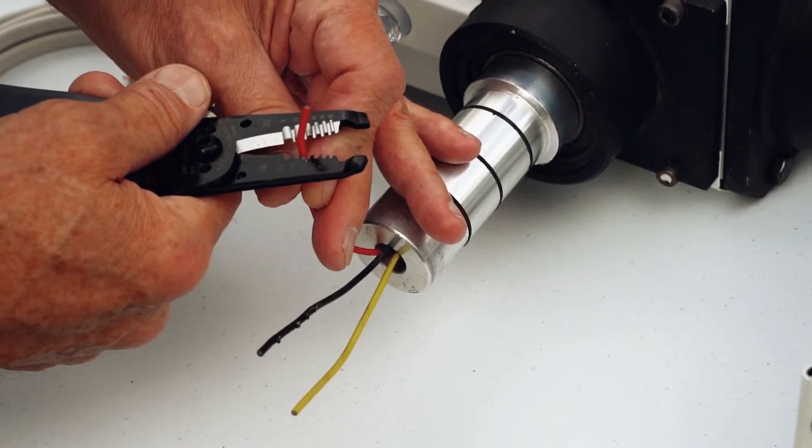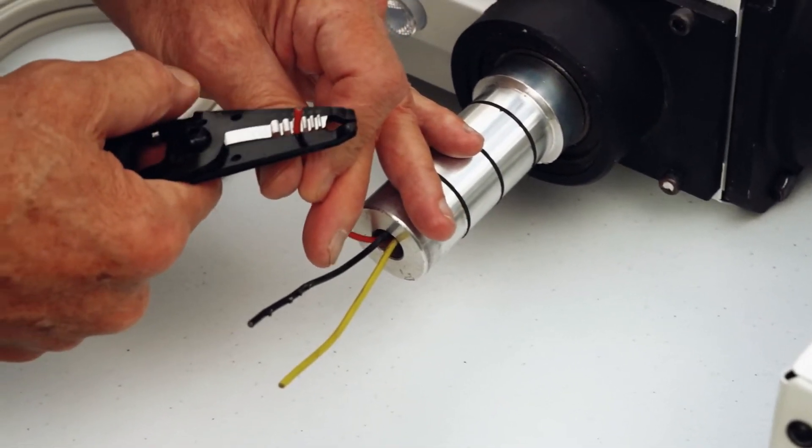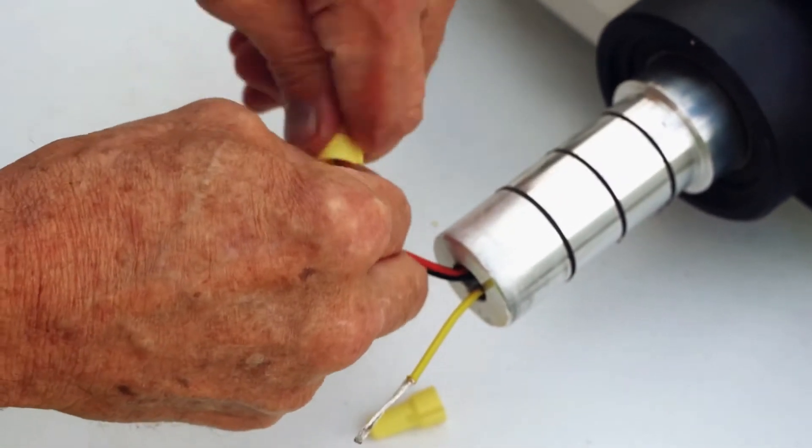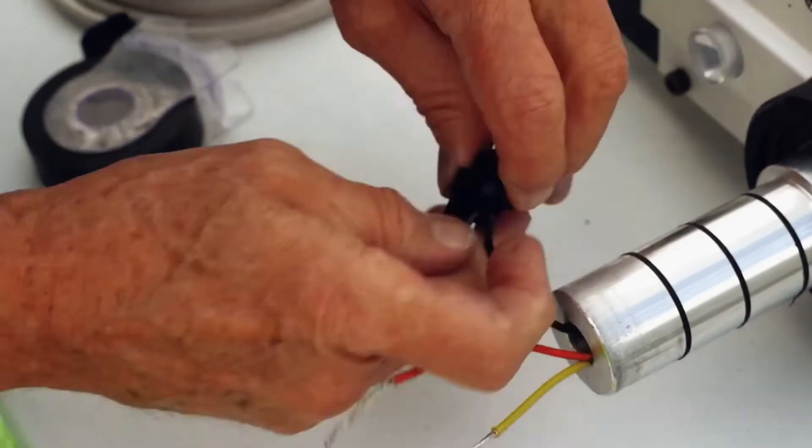After you have fed the wiring through the mast, strip the wiring from the motor and the connecting wires. Next, match the wiring and secure with a wire nut, then wrap some electrical tape around each connection when finished.